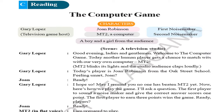The characters in this lesson are: Gary Lopez — television game host; John Robin Robinson; MT2 — a computer; first noisemaker; second noisemaker; a boy and a girl from the audience. The scene is a television studio. Gary Lopez makes the announcement: 'Good evening, ladies and gentlemen! Welcome to the Computer Game!'